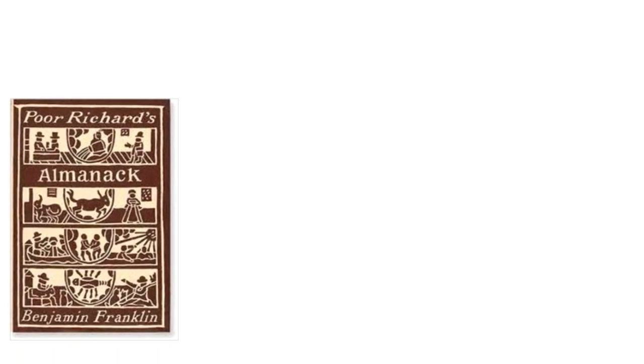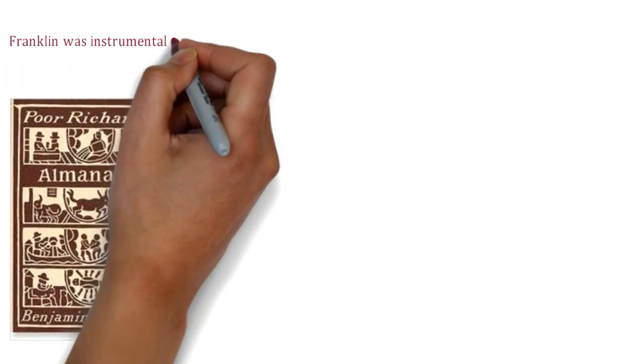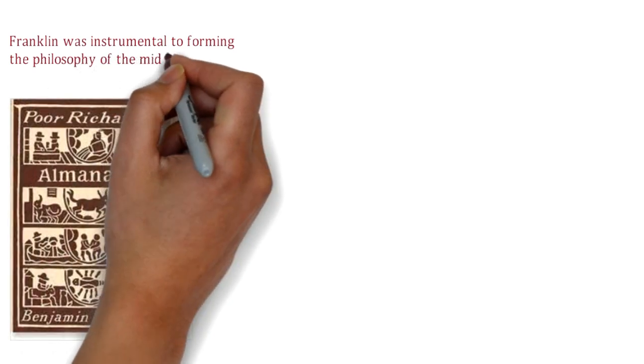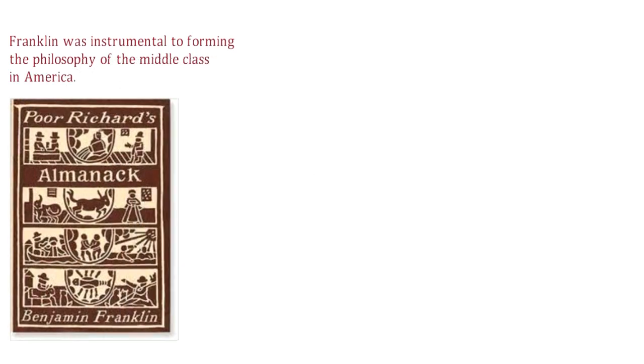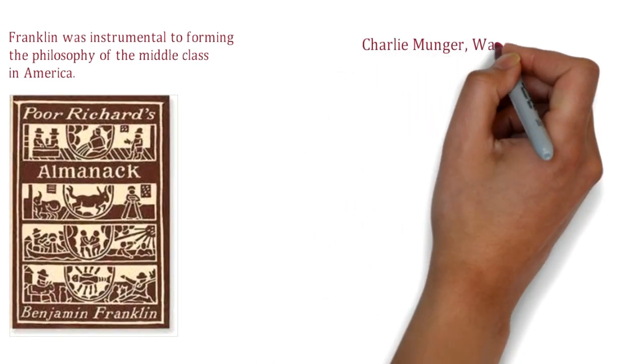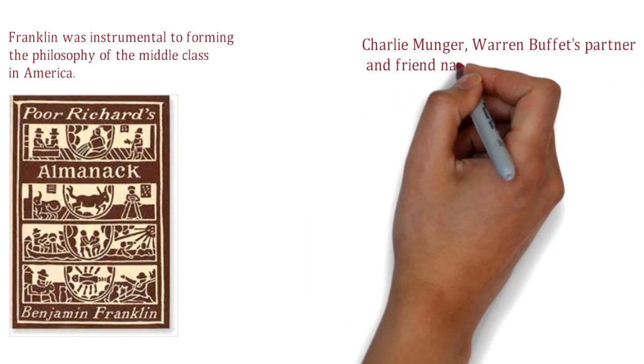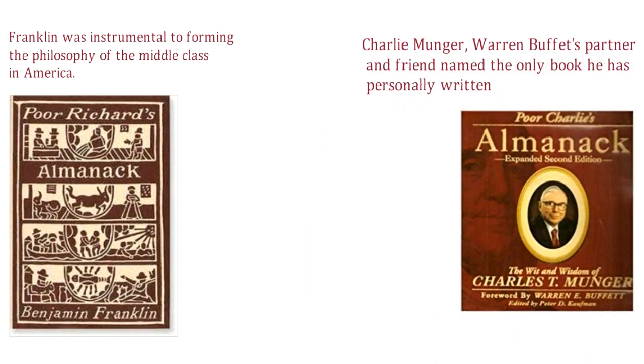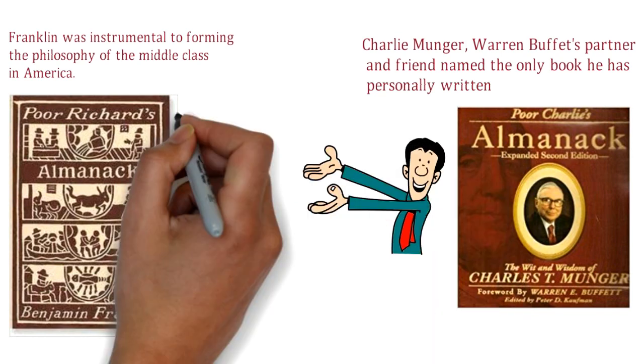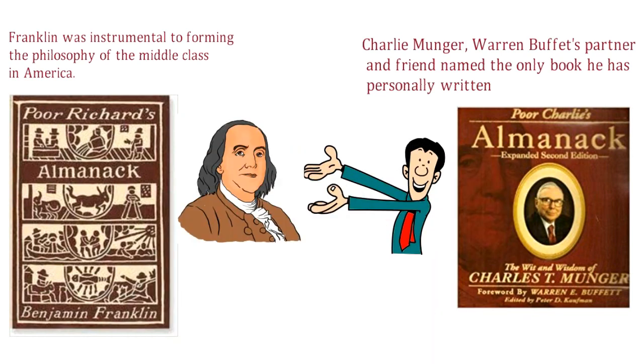Using a lot of direct quotes from Poor Richard's Almanac, Franklin was instrumental in forming the philosophy of the middle class in America. Charlie Munger, Warren Buffett's partner and friend, named the only book he's personally written Poor Charlie's Almanac in dedication to Benjamin Franklin. That should tell us something.